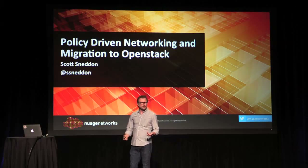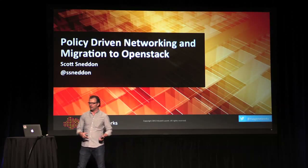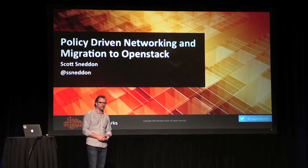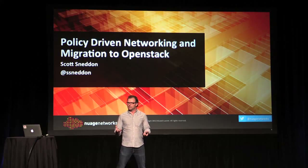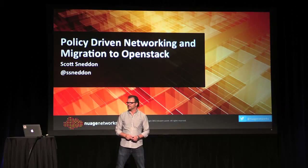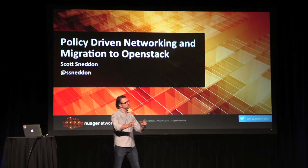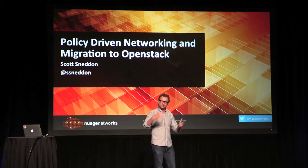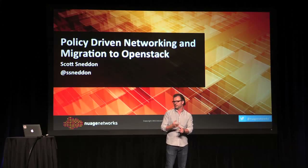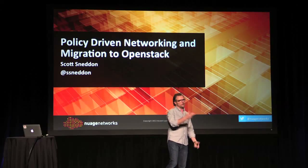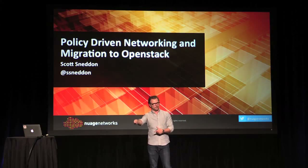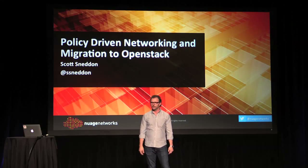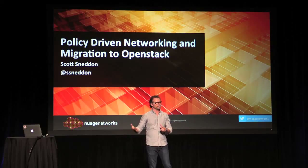I'm going to talk about network policy and the activity happening in the OpenStack and Neutron networking area around this policy abstraction framework and why that's important. Then I'm going to do a really short demo — because this is the demo theater — showing Nuage network virtualization between an OpenStack cluster and a couple of networks, doing routing and switching, and then connecting those networks to a VMware cluster with vSphere and ESX, starting a VM there and showing routing and switching between ESX and Neutron.